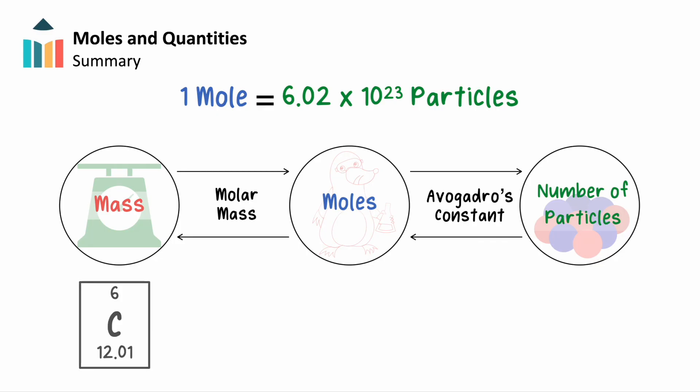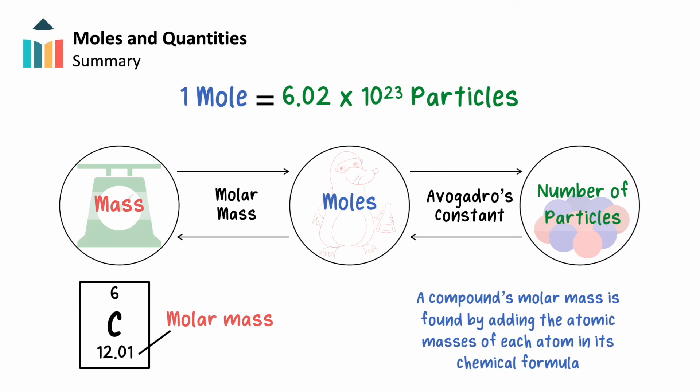Additionally, we'll use the periodic table to find the molar mass of a singular element or a compound by taking the sum of atomic masses for each atom in the chemical formula.